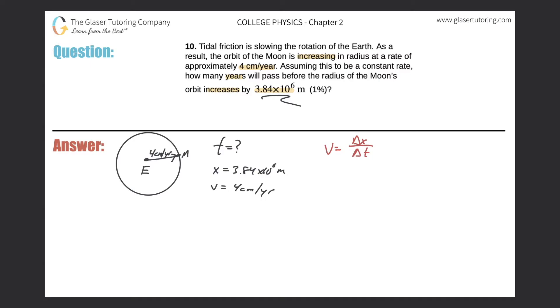So what was the velocity? Well, they told us 4 centimeters per year. And the change in displacement, they said, is going to be 3.84 times 10 to the 6 meters. And time is what I'm looking for. So it looks like I have everything I need. I know this variable. I know this variable. Therefore, I can calculate the time.